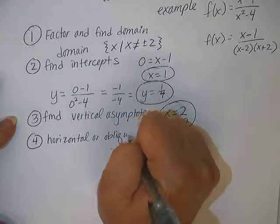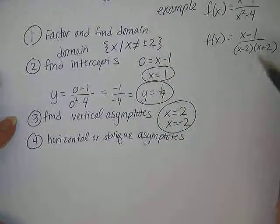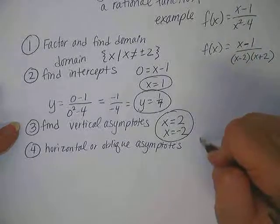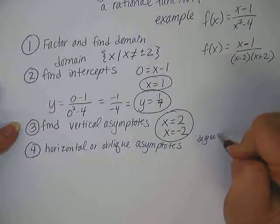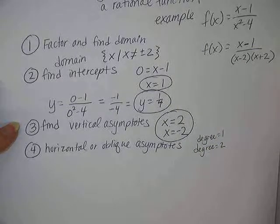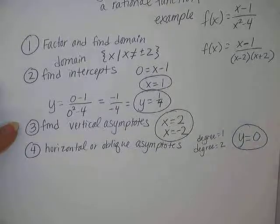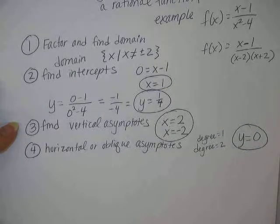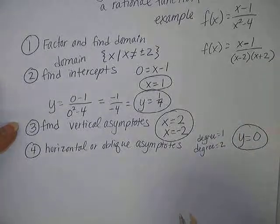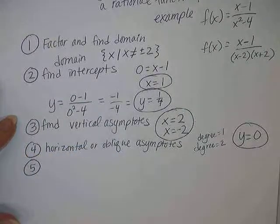Okay. Number 4, horizontal or oblique asymptotes. We have to look at the degree. So let's look at our original problem. The degree of the numerator is 1. The degree of the denominator is 2. That makes this possibility number 1. And it's the easiest one there is. There's only one horizontal asymptote. Well, there's usually only, there's only one horizontal or one oblique. That's it. And it is located at y equals 0.